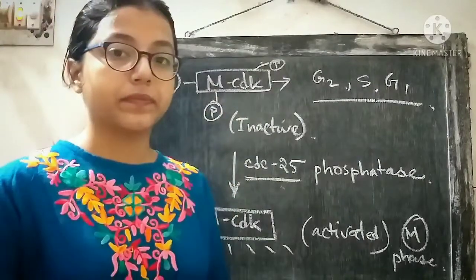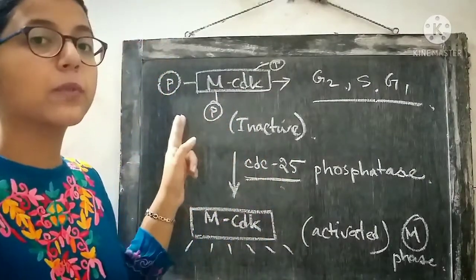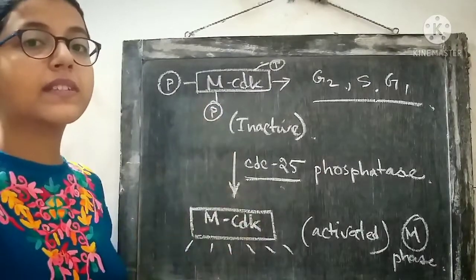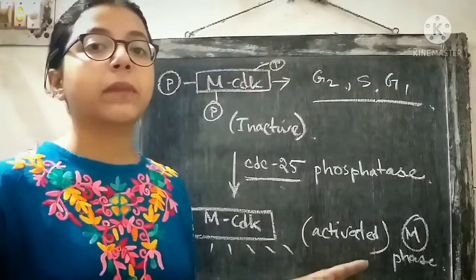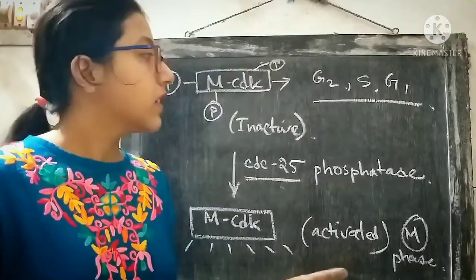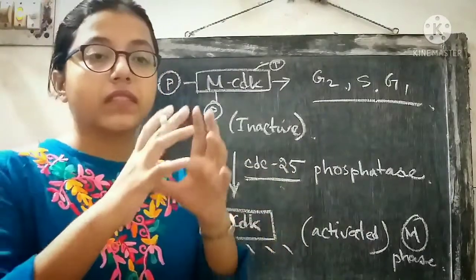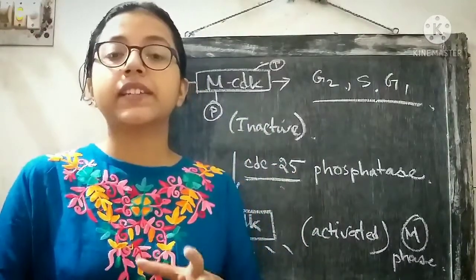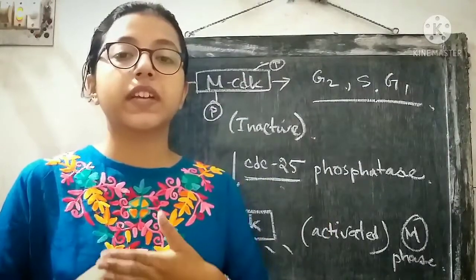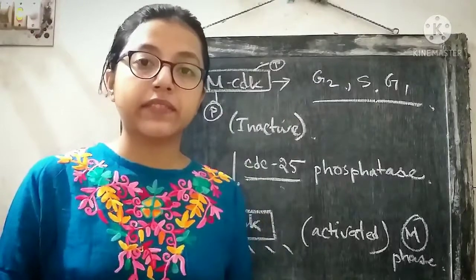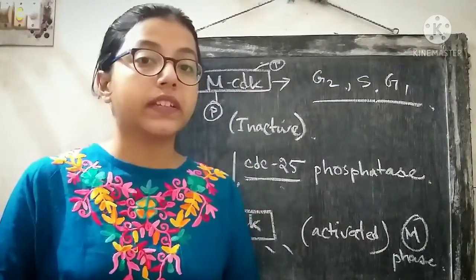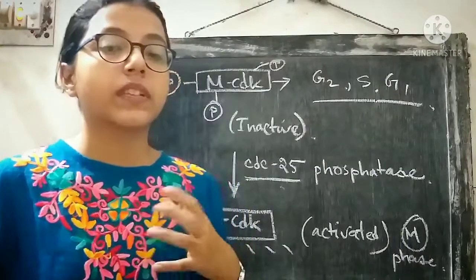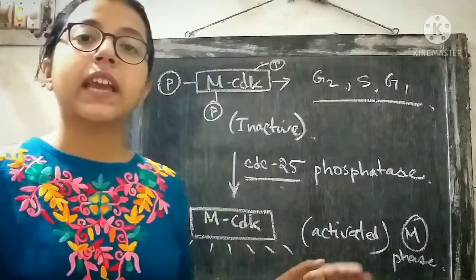If the activity of CDC25 phosphatase is inhibited, the MCDK cannot be activated. The phosphate groups on MCDK will not be removed and MCDK will remain inactive. As a consequence, the cell will not progress into the mitosis phase. In summary: MCDK is kept inactive in G2 phase, then activated in late G2 just prior to M phase by CDC25 phosphatase, which cleaves the inhibitory phosphate group. This phosphatase-driven activation of MCDK enables progression of the cell into the M phase.